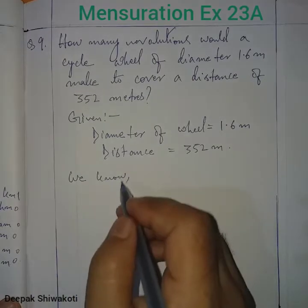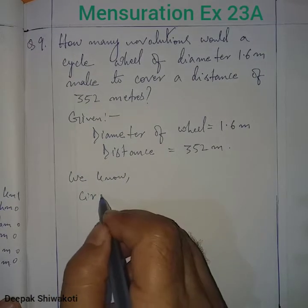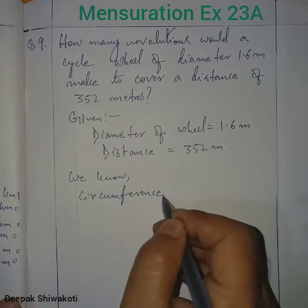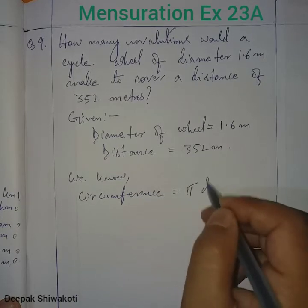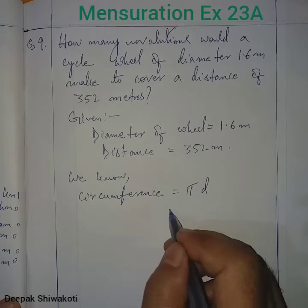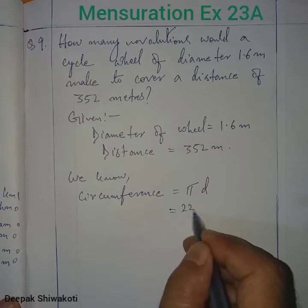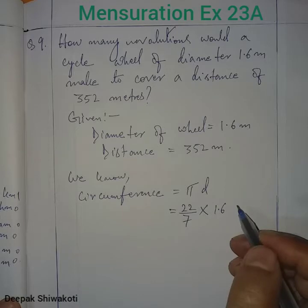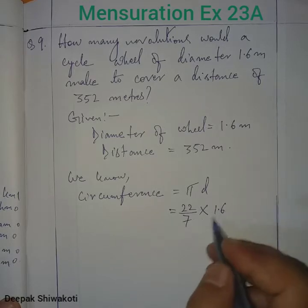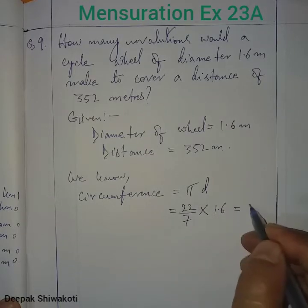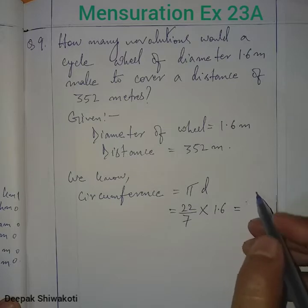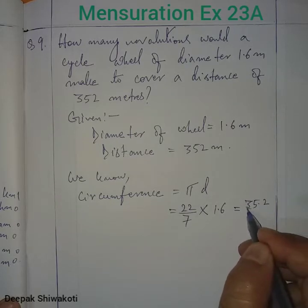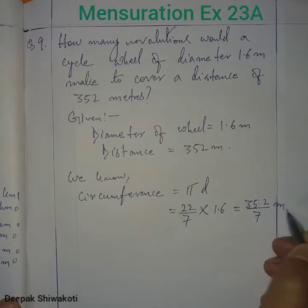First, let us find the circumference. We know circumference equals π × D. The value of π is 22/7 and D is 1.6 meters. When you calculate it, you will get 35.2/7 meters.